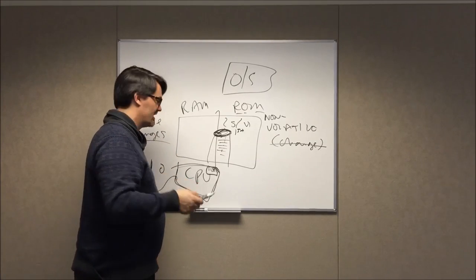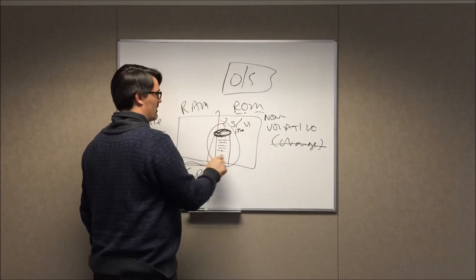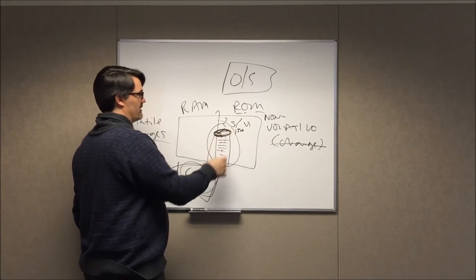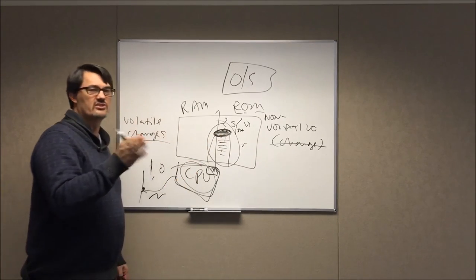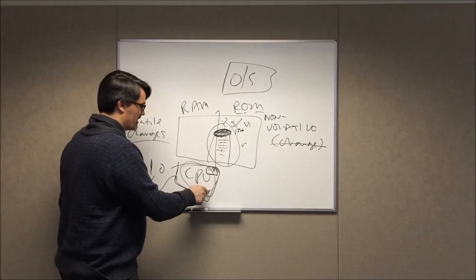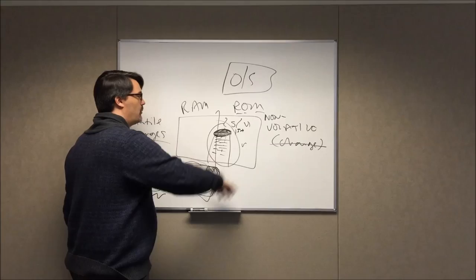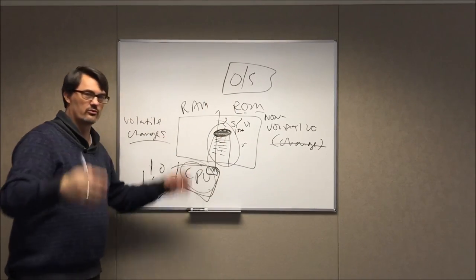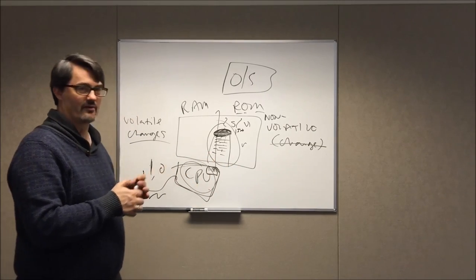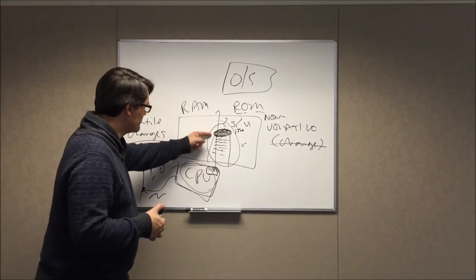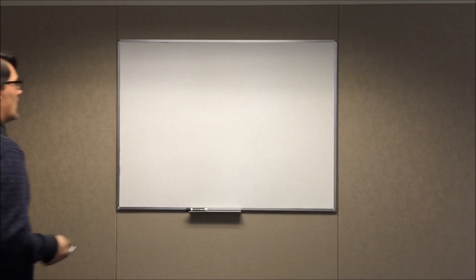For every combination of CPU, operating system, and memory, there's an exact location in memory that is the first place to go. The CPU goes to that memory location and does exactly what it's told — all the way up to the point where the operating system is running and the computer is ready to use. Until that point, it's executing instructions permanently stored in read-only memory.